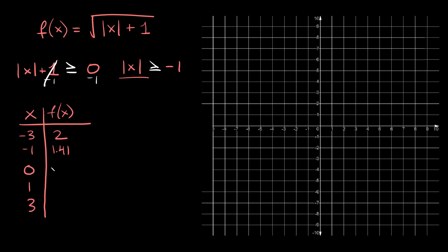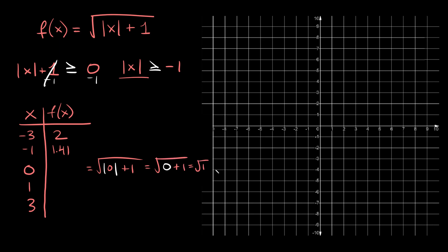Now let's plug in 0. f(x) equals the square root of the absolute value of 0 plus 1. The absolute value of 0 is just 0, so we get the square root of 0 plus 1, which is the square root of 1, which equals simply 1.